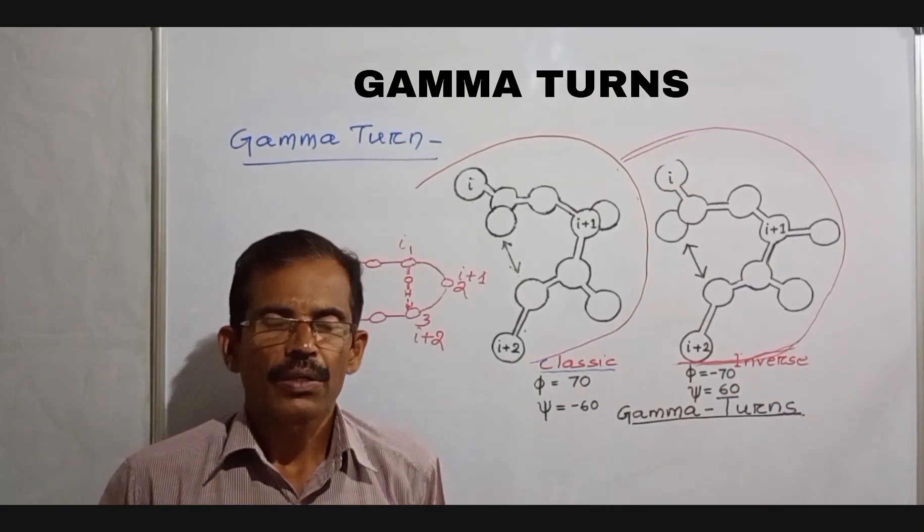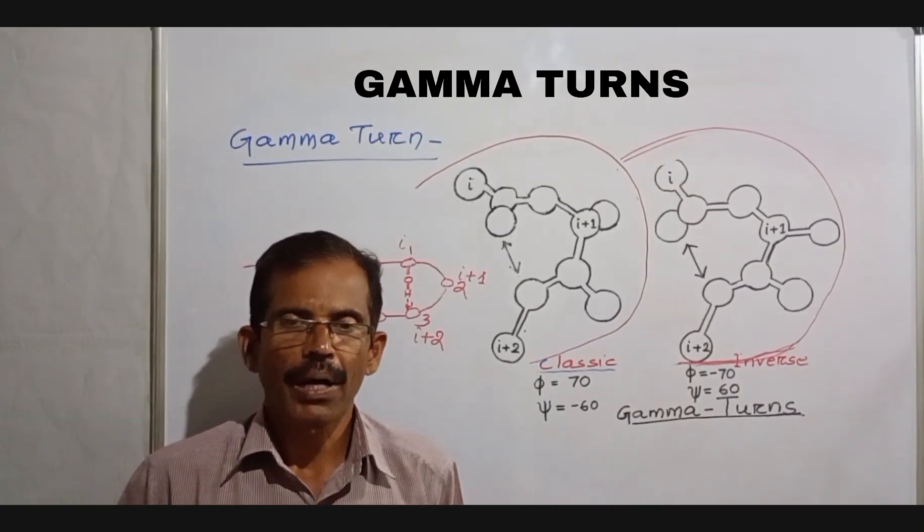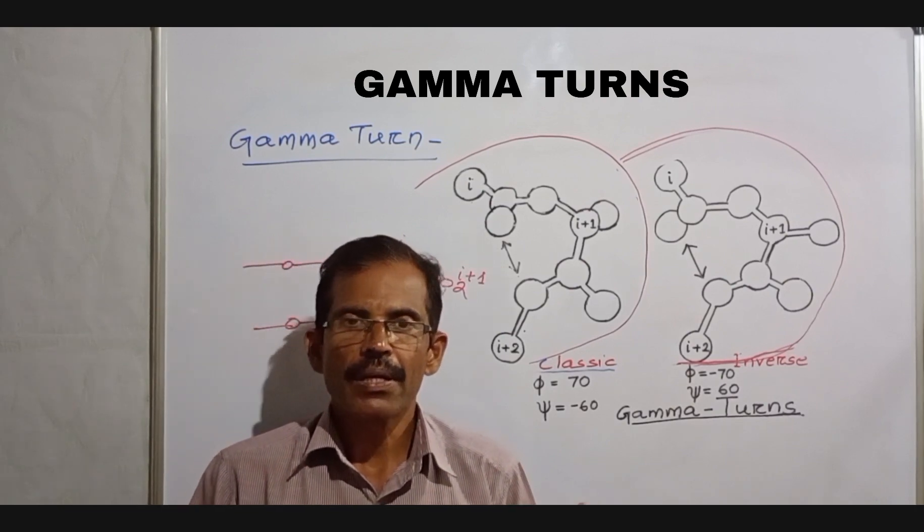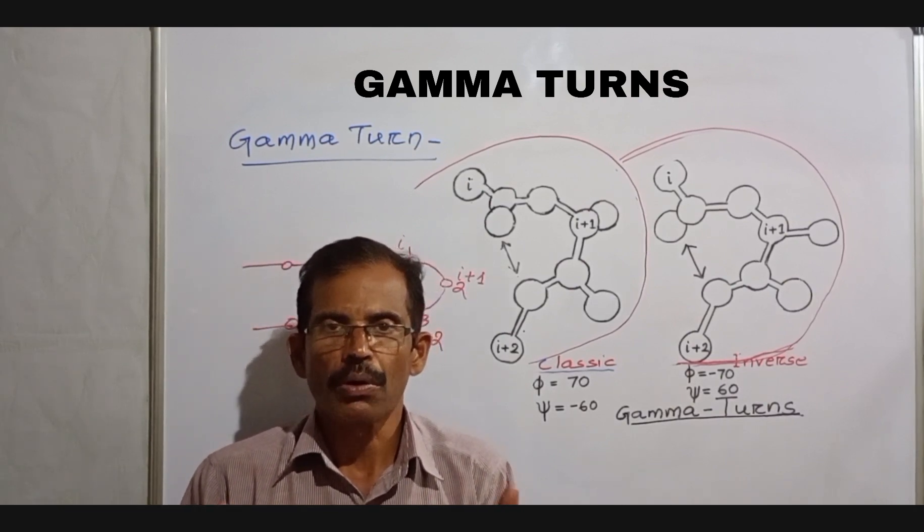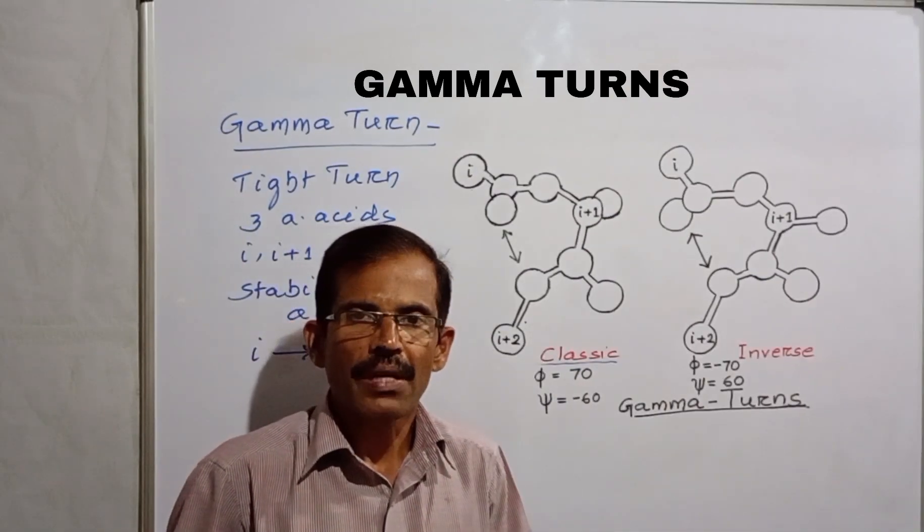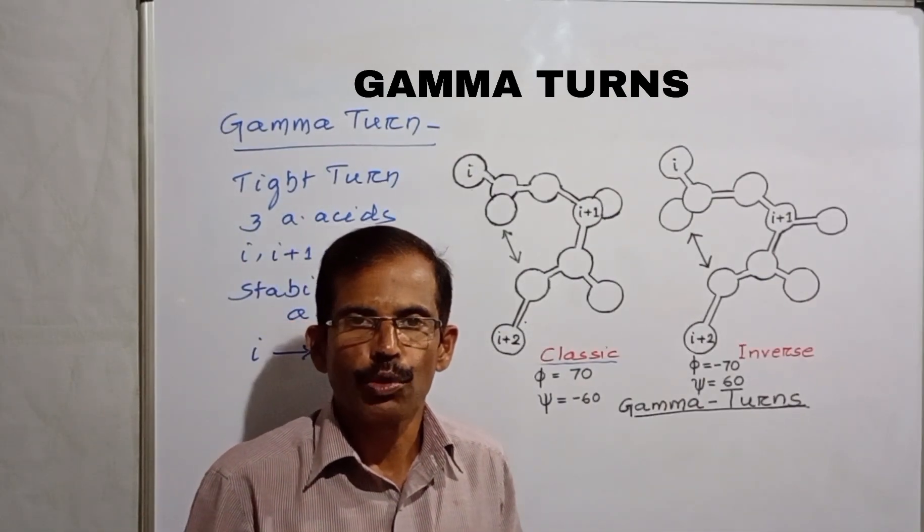So, Gamma Turns are short segments of three amino acids stabilized by an inter-residue hydrogen bond. Gamma Turns are fairly common in proteins.